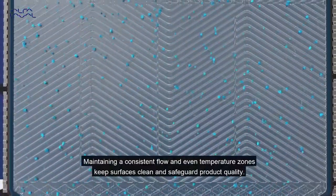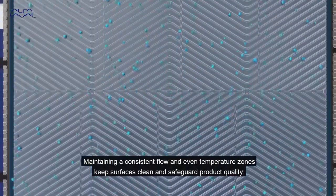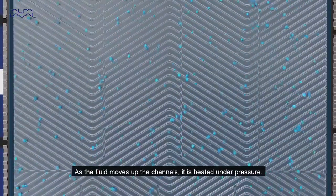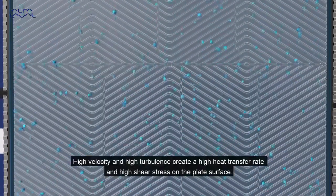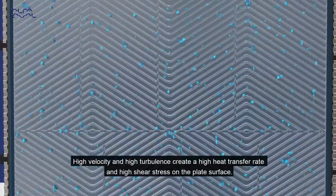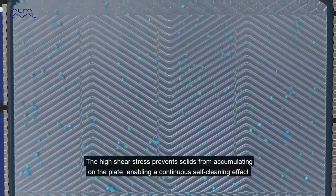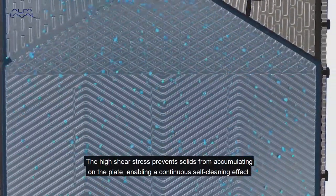Maintaining a consistent flow and even temperature zones keeps surfaces clean and safeguards product quality. As the fluid moves up the channels, it is heated under pressure. High velocity and high turbulence create a high heat transfer rate and high shear stress on the plate surface. The high shear stress prevents solids from accumulating on the plate, enabling a continuous self-cleaning effect.